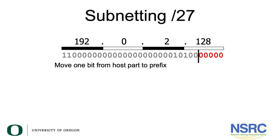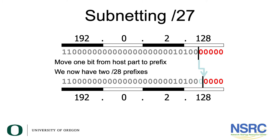We will show you the different bits of the IP address as we had shown you in the previous example. In this case, 192.0.2.128 is represented as shown on the screen. If we're subnetting a /27, you have to remember that the number of host bits is 5. If you want to divide this into two different prefixes, you would simply move one bit from the host part to the prefix. Moving the bit to the prefix portion ensures that you divide the prefix into two.